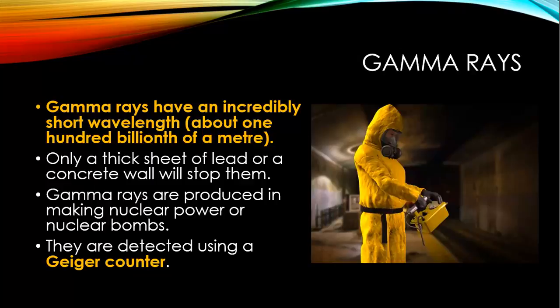Gamma rays are the last type on the electromagnetic spectrum and have incredibly short wavelengths — about one hundred billionth of a meter. Only a thick sheet of lead or concrete will stop them. Gamma rays are produced in making nuclear power or nuclear bombs, and they're detected using a Geiger counter.